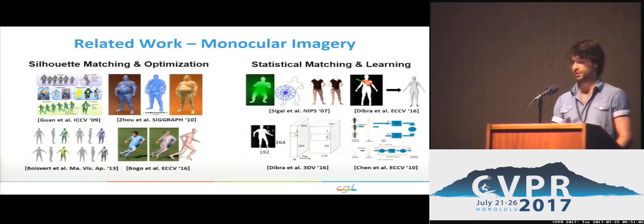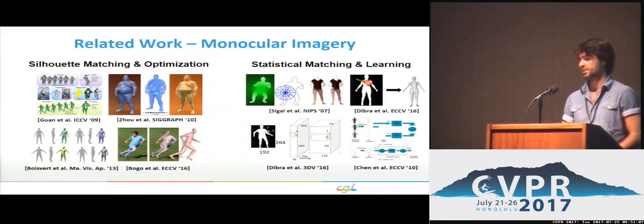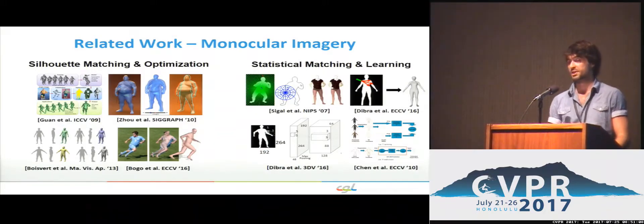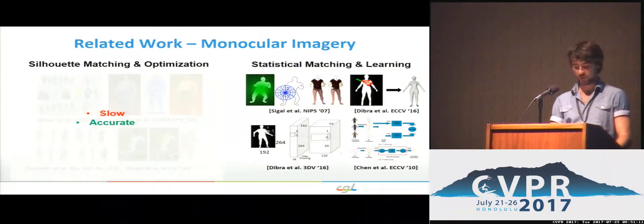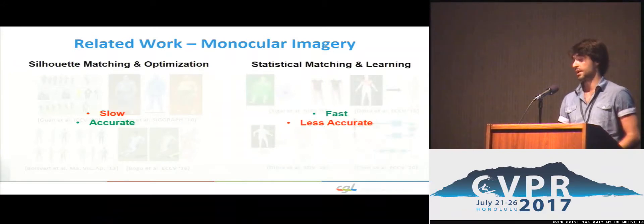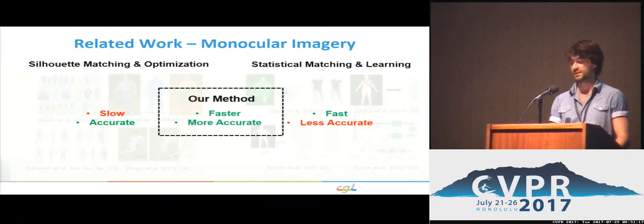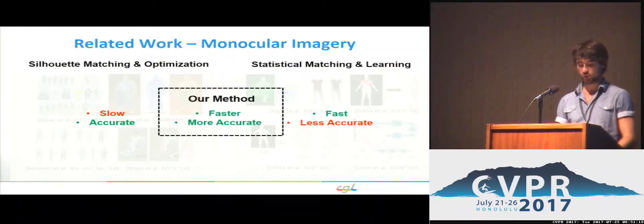With respect to related work in this domain, we could put them into two main groups: silhouette matching and optimization-based methods, and statistical matching and learning methods. While the first ones are typically more accurate but slow, the latter are fast but not super accurate. Our method falls into the second category and improves both on accuracy and speed.